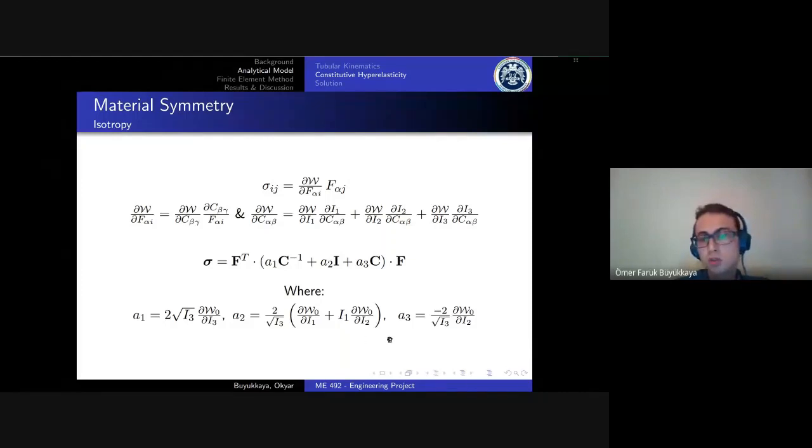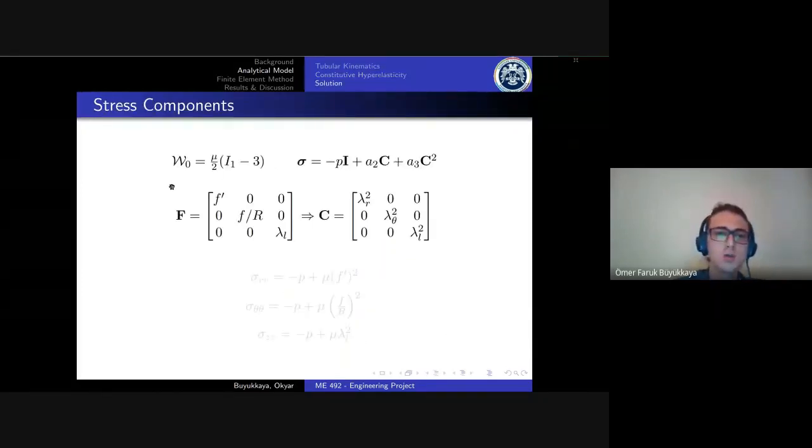To take these derivatives we must define a material property, which is a Neo-Hookean type of material. Here it just depends on the first invariant of the deformation tensor. Mu here is the initial shear modulus of the material, which in this case is 0.035. Because of the incompressibility condition we replace the first term of the stress tensor with the hydrostatic pressure term.